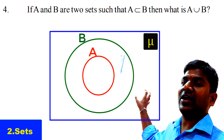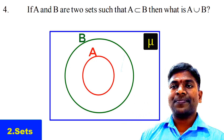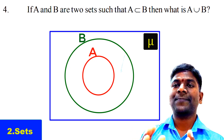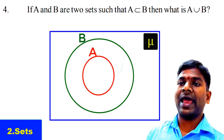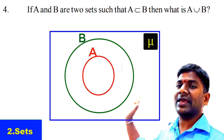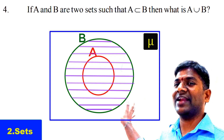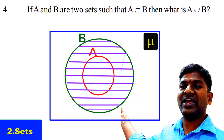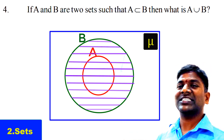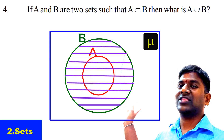Looking at the Venn diagram shown on screen, which represents A ⊆ B: A union B means all elements of A and B. When we shade the regions belonging to A and B, the total Set B is shaded entirely. The elements in the shaded region are the elements of A union B, and the shaded region is clearly Set B. So from the figure, A union B is nothing but B.